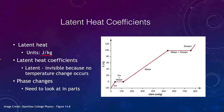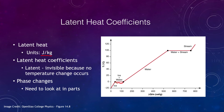Looking at the phase change diagram, the horizontal axis shows the amount of energy added and the vertical axis shows temperature. If you start with ice at a very cold temperature and add energy, the ice heats up but does not yet melt. It does not melt until you reach zero degrees Celsius. At that point, a phase change occurs, and it takes a certain amount of energy to convert all that ice to water, while the temperature remains at zero degrees throughout.